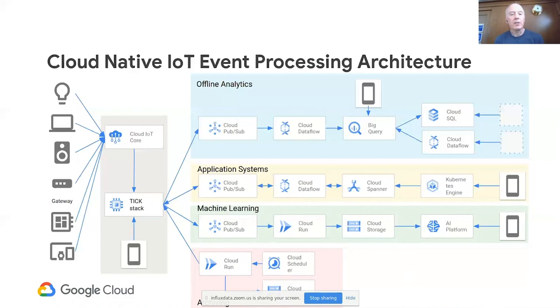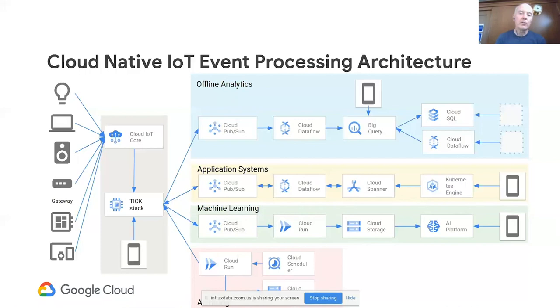This is one example of how to address many of the use cases discussed; your specific use case may require different architectures or service combinations. In summary, we looked at how an event can be ingested, stored, analyzed, and archived using Google Cloud services, based on the InfluxDB time series database and its ability to connect to the outside world through different interfaces. Thank you very much for listening, and I hope to see you on Google Cloud soon.